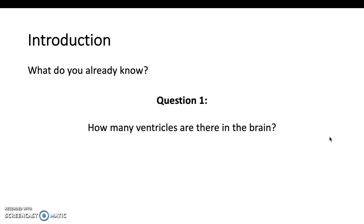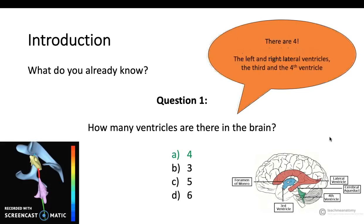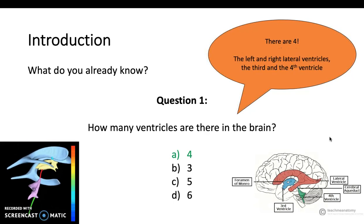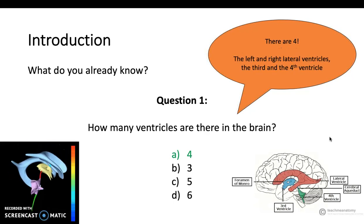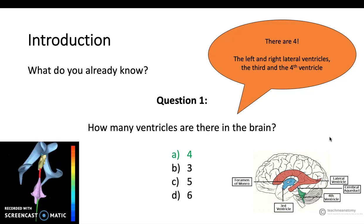How many ventricles are there in the brain? Four, three, five or six? Try and visualise the structure in the brain and where you think they lie. There are four: the left and right lateral ventricles, the third and the fourth ventricle.